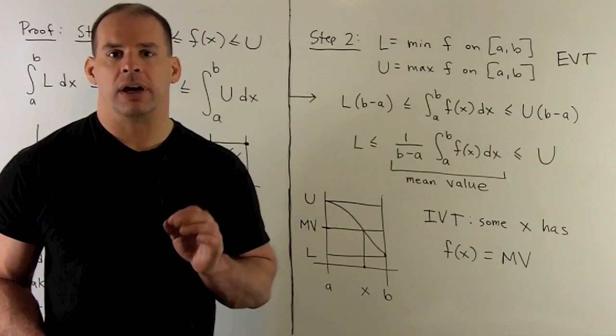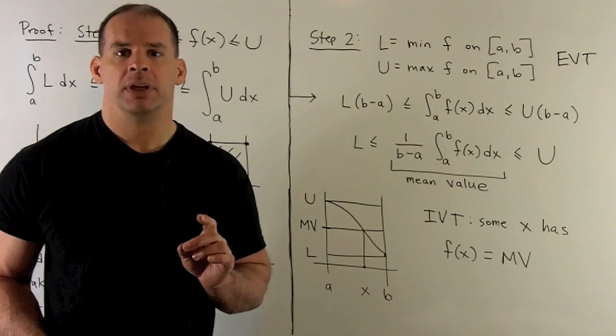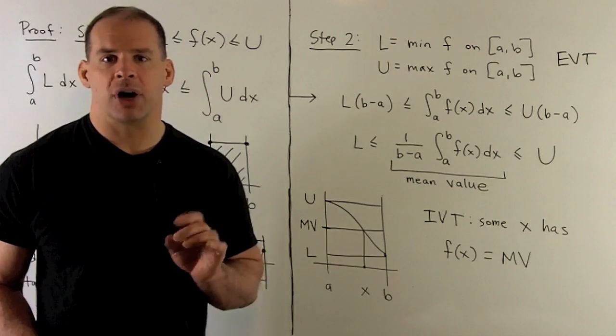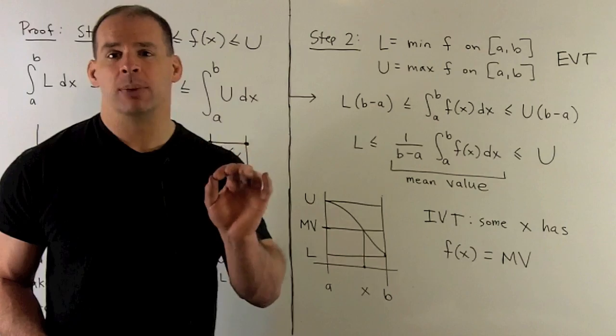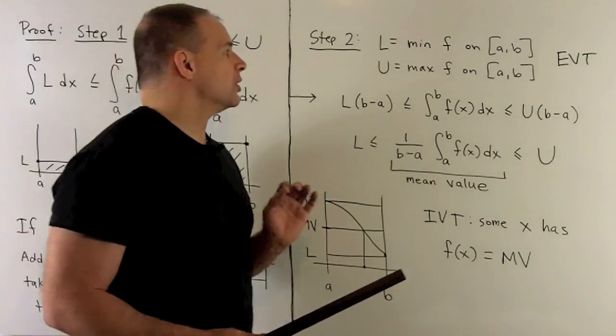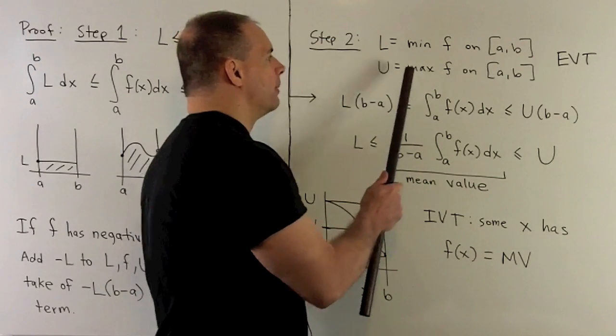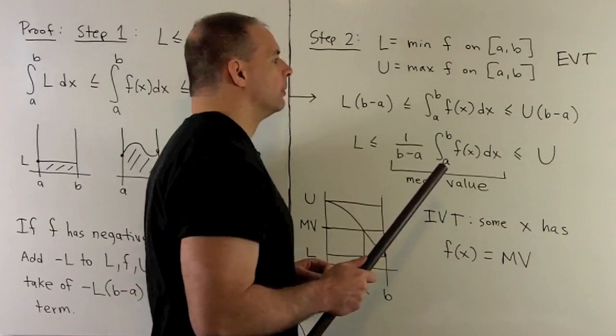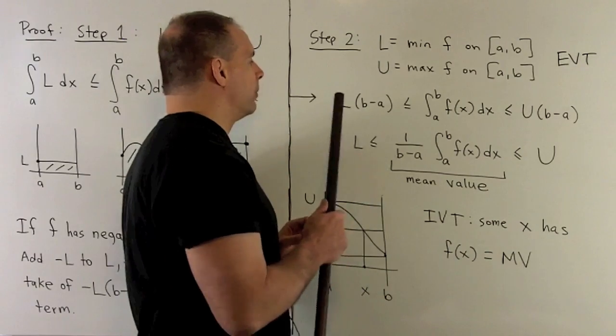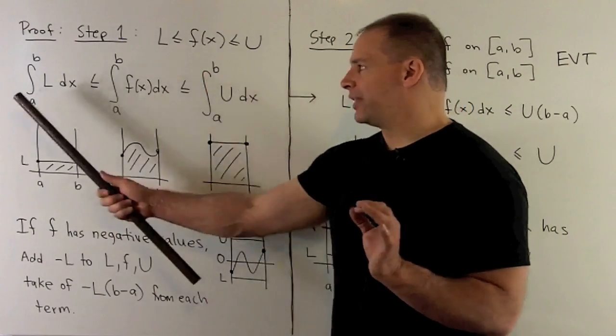Now, to prove our theorem, we have a continuous function on a closed interval. So, the extreme value theorem says our function attains its maximum and its minimum for some points on the interval. So, we'll call our capital L the minimum of our function on the interval, capital U the maximum of our function on the interval. So, that's going to mean, if I put them in to our previous result, we'll have this inequality.